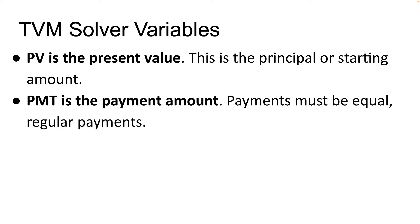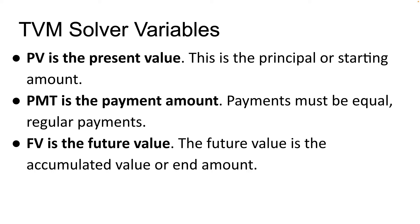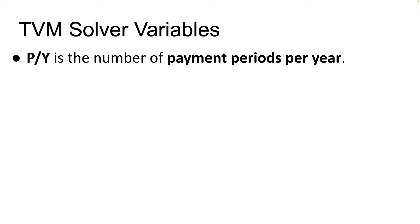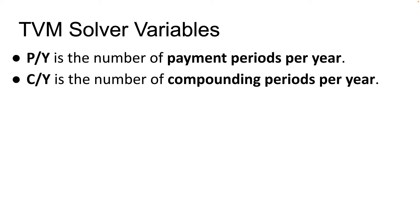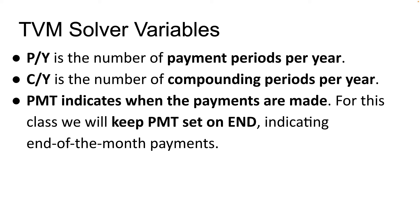PMT is the payment amount. Payments must be equal, regular payments — the same payment each month, quarter, year, etc. FV stands for the future value, which is the accumulated value or the end amount. PY is the number of payment periods per year, and CY is the number of compounding periods per year. The PMT at the end indicates when the payments are made. For this class, we keep PMT set at N, indicating end-of-the-month payments.